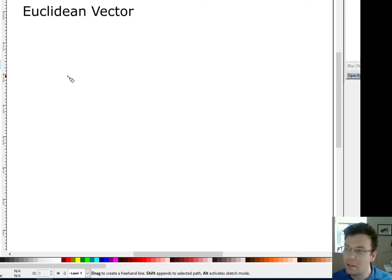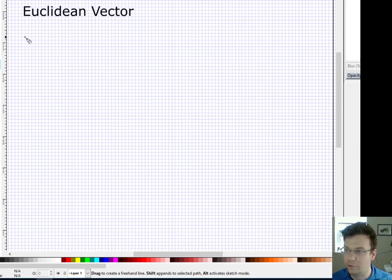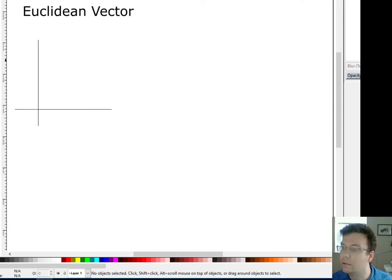Okay, so before we get into Euclidean vectors, let's just quickly review the Cartesian coordinate system. So let me draw some coordinate axes here. Okay, so that's more or less straight. So if we're trying to plot points in 2D, we say okay, this is the positive x-axis in this direction.